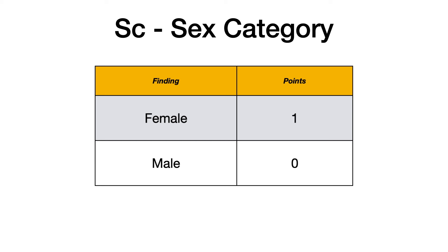If you're going through CHADS-VASC for the first time, don't get confused about the A's — medical students get hung up on this all the time. Only worry about the first A, which is A2, because you can score up to two points for age.